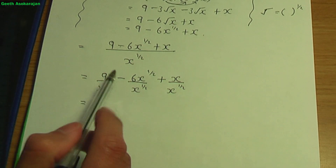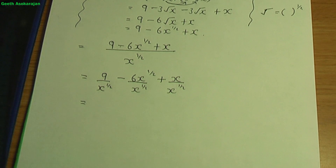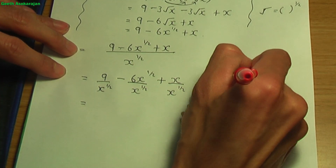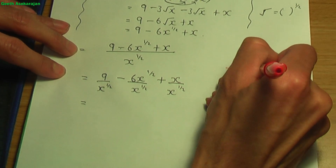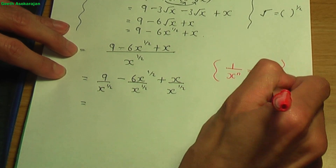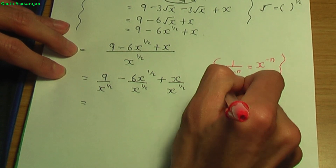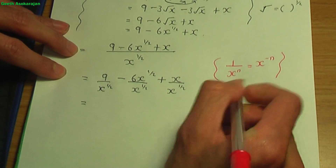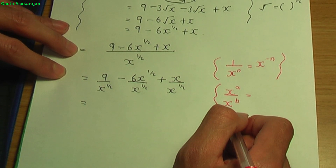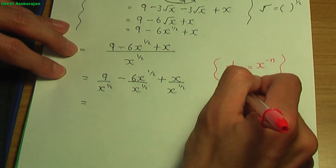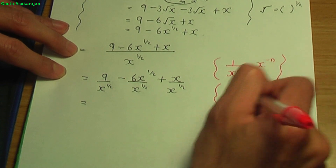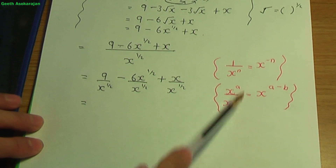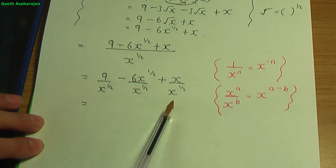Now let's use the rules of indices to simplify each of these terms. One of the rules: if you have 1 over x to the n, that is x to the minus n. Another rule is that if you're dividing two terms having the same base, we subtract powers — so it's x to the power a minus b. It's important that we apply these rules to simplify further.